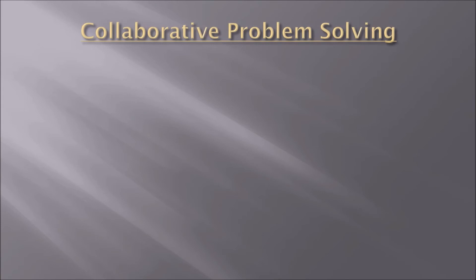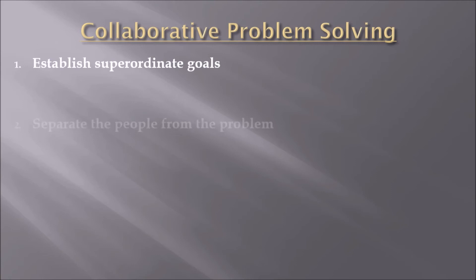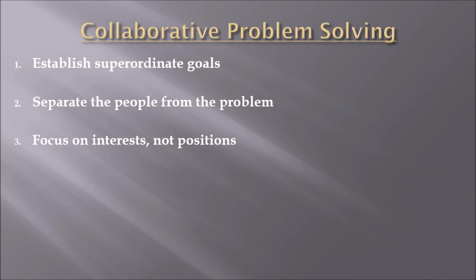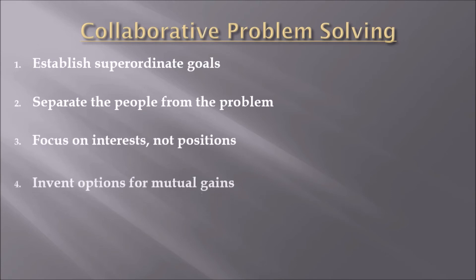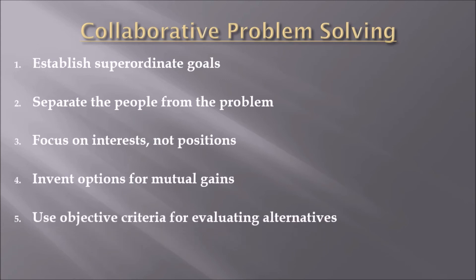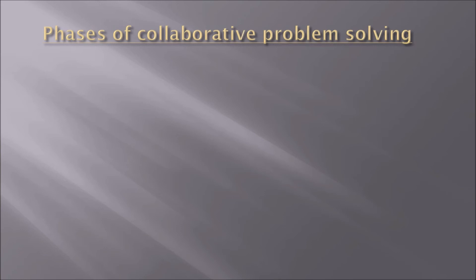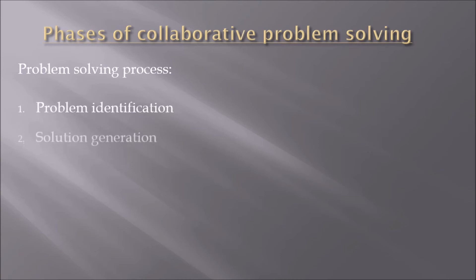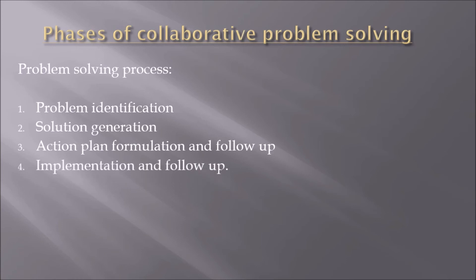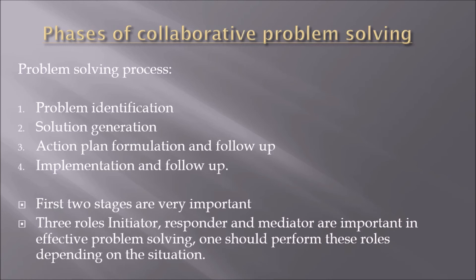Collaborative problem solving: establish superordinate goals; separate the people from the problem; focus on interests, not positions; invent options for mutual gains; use objective criteria for evaluating alternatives; define success in terms of real gains, not imaginary losses. The phases of collaborative problem solving are: problem identification, solution generation, action plan formulation, and implementation and follow-up — with the first two stages being most important. Three roles — initiator, responder, and mediator — are important in effective problem solving, and one should perform these roles depending on the situation.